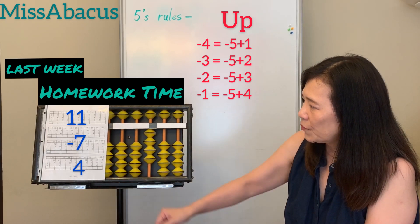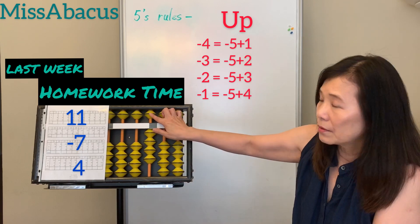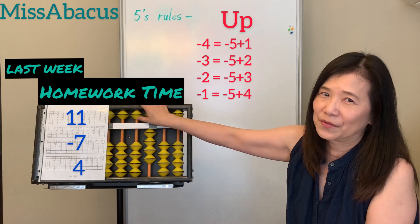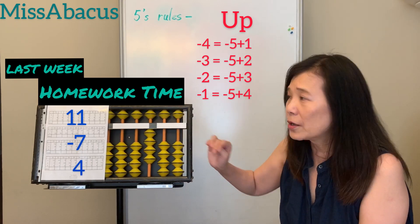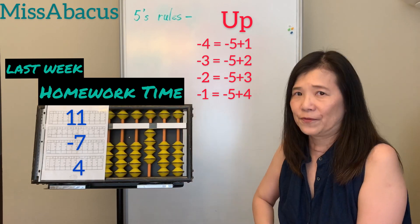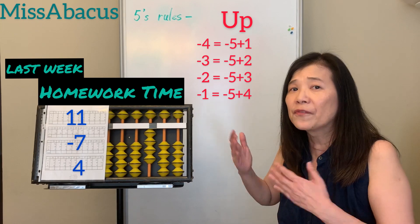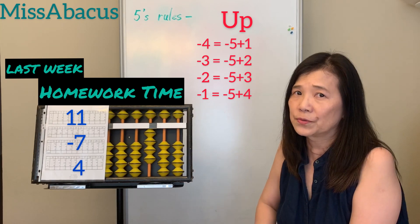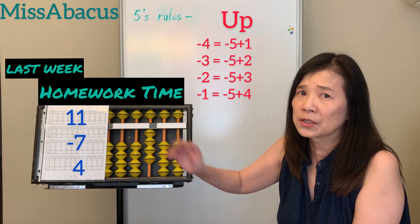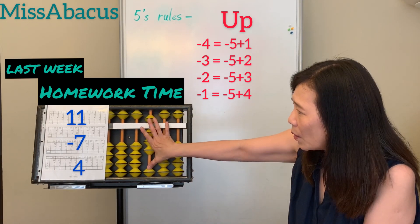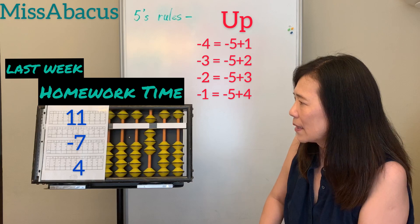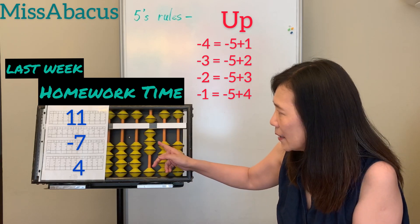Then plus 4: you have 5, use the 5's rule. When you do 1, 2, 3, 4 — check your 5 first. If you have 5, use the 5's rule; you don't need to touch the 10's. For the 4: down 5, down 1. Answer: 8.